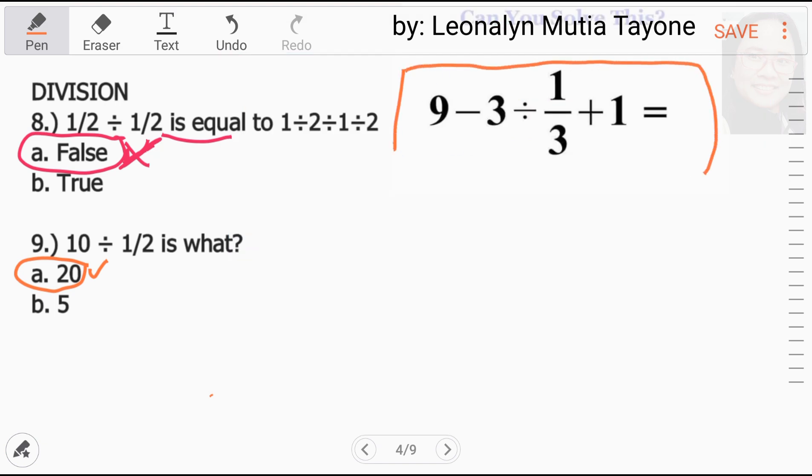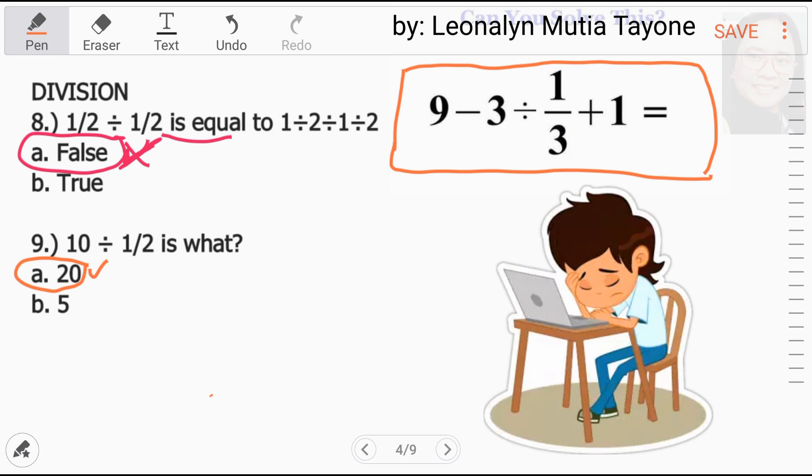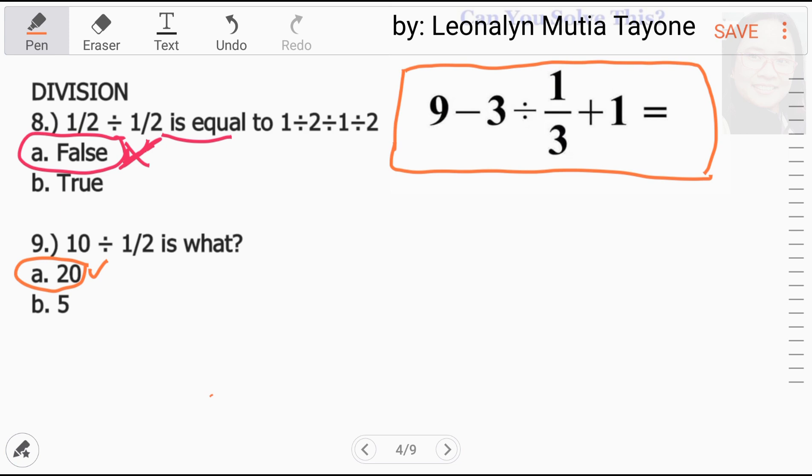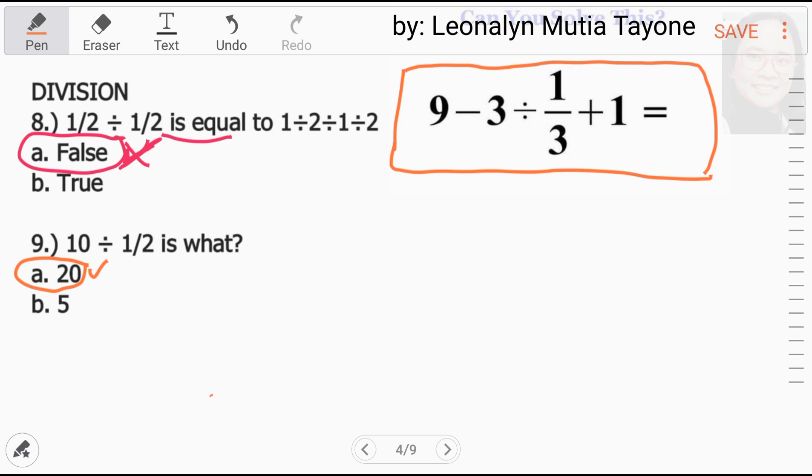Ngayon, ma-solve lang natin ito kung i-review natin yung order of operation. So, kung yung detalye regarding sa order of operation, panuorin nyo yung part 1. Ilalagay ko sa description ng video ito yung link sa part 1 dito para ma-review nyo yun kung bakit or kung bakit ganit-ganon tayo mag. Kasi yung iba naman, yung pag-solve nila sa MDAS as usual, unahin nila yung multiplication kahit ang nauna ay division. Sa step number 4 naman, unahin talaga nila yung addition kahit ang nauna naman ay subtraction.